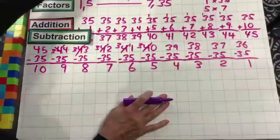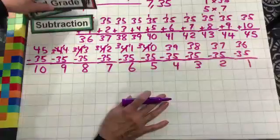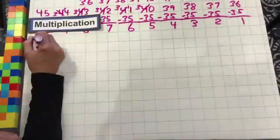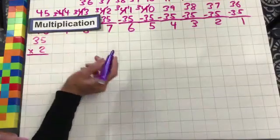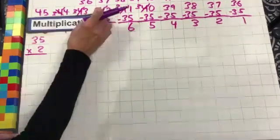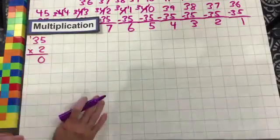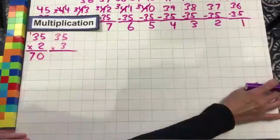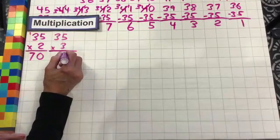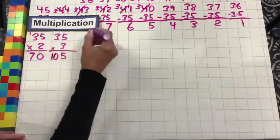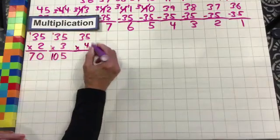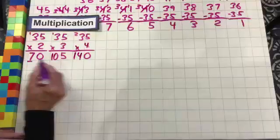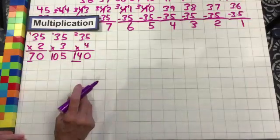Let's move on to multiplication. 35 times two — we'll start with times two because times one is just 35. Two times five is 10, drop the zero, carry the one, two times three is six plus one is seven. 35 times three: three times five is 15, drop the five, carry the one, three times three is nine plus one is 10. 35 times four: four times five is 20, drop the zero, carry the two, four times three is 12 plus two is 14. And look at this — this is twice that, so every other one is going to be a multiple of seven.